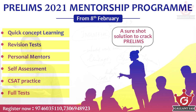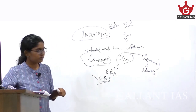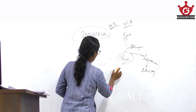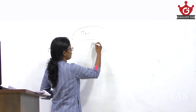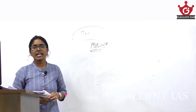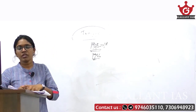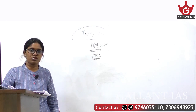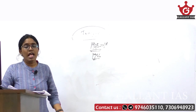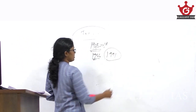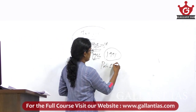Now briefly about industrial policies and LPG reforms. The first industrial policy was introduced by India's Minister for Industries, Shyama Prasad Mukherjee, in 1948. Then came the Industrial Policy Resolution of 1956, which focused on public sector-led heavy industries with an emphasis on employment generation, self-reliance, and provision of raw materials, intermediate goods, and machinery. The most important was the 1991 Industrial Policy, which was a reaction to the Balance of Payments crisis.